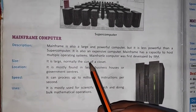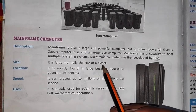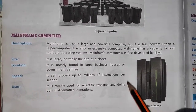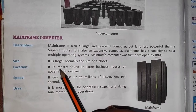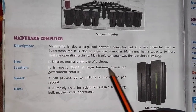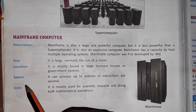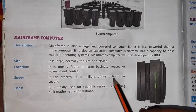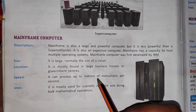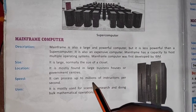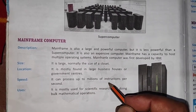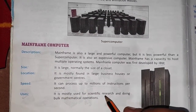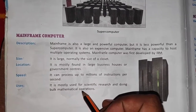The size of a mainframe computer is about the size of a closet or a large cabinet. It is also used in bigger business houses or government departments. The speed of a mainframe computer is millions of instructions per second — not trillion as in supercomputers, but millions. Mainframe computers are used for scientific research and mathematical operations.